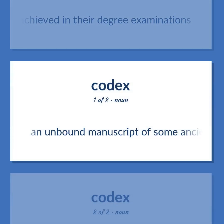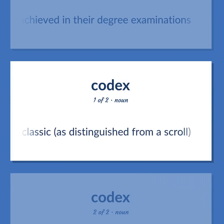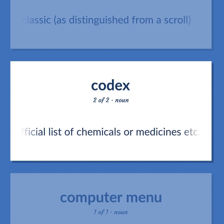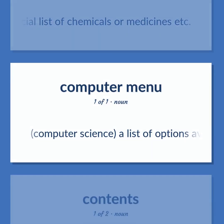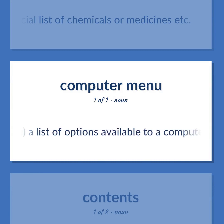Codex: An unbound manuscript of some ancient classic, as distinguished from a scroll. Codex/Pharmacopoeia: An official list of chemicals or medicines. Computer menu: A list of options available to a computer user.